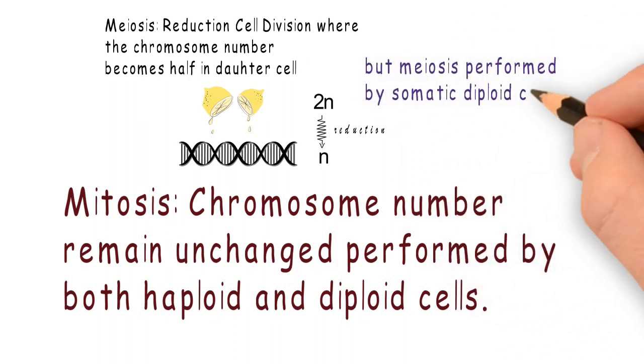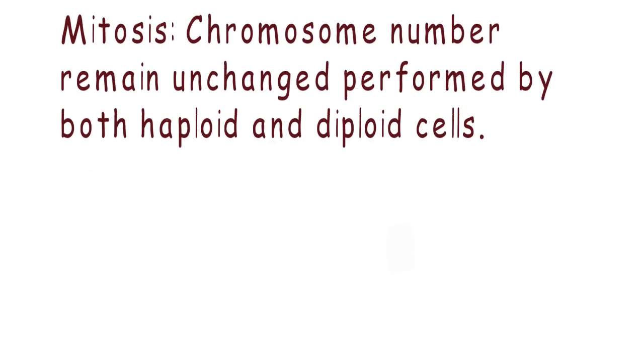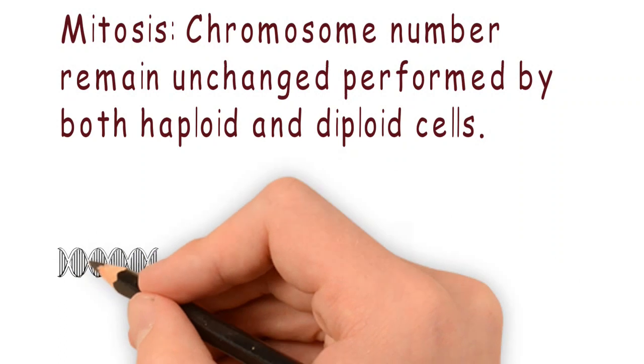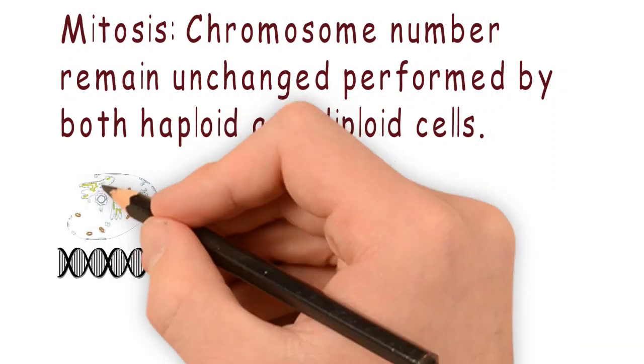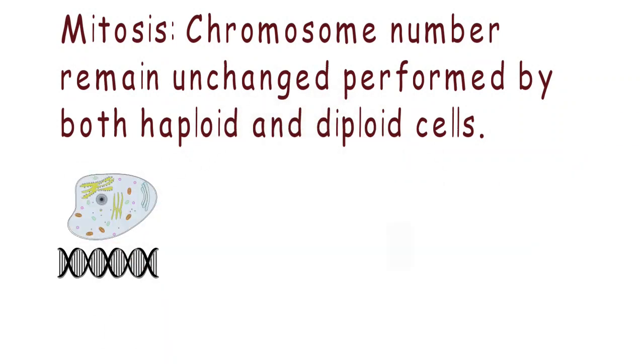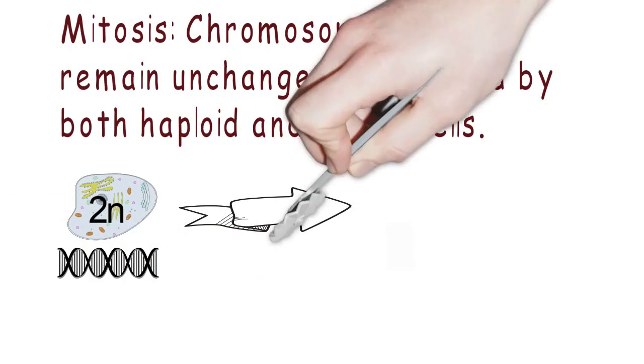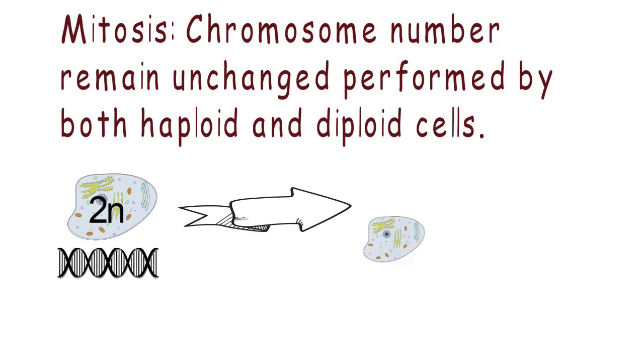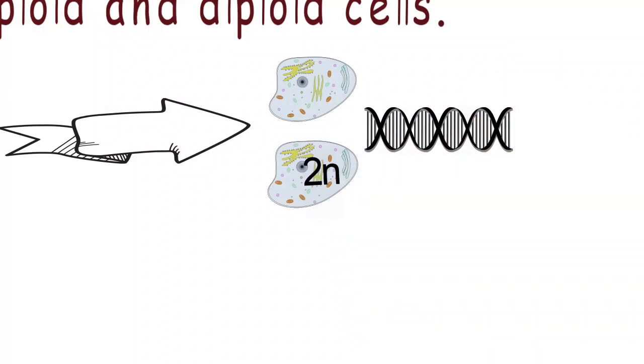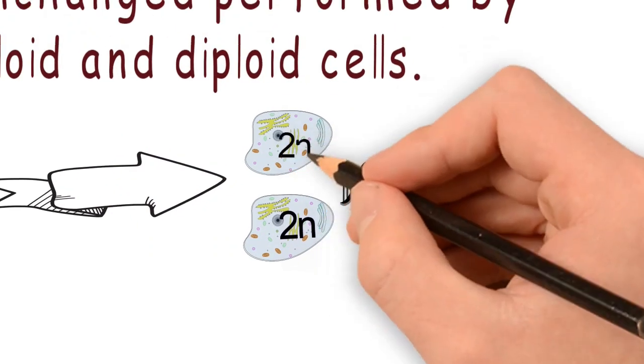Let's take an example of a diploid cell containing 2n number of chromosomes. If it is reproduced by mitotic cell division, both new daughter cells will have the same number of chromosomes - that is 2n and 2n. This is the characteristic.